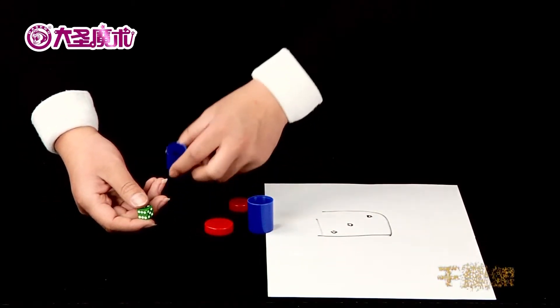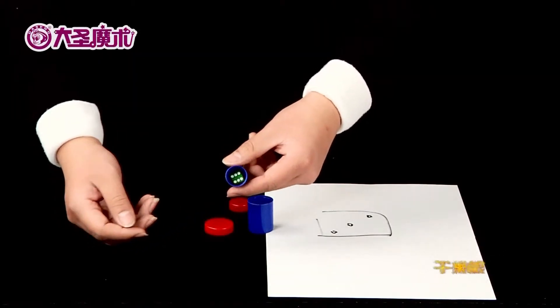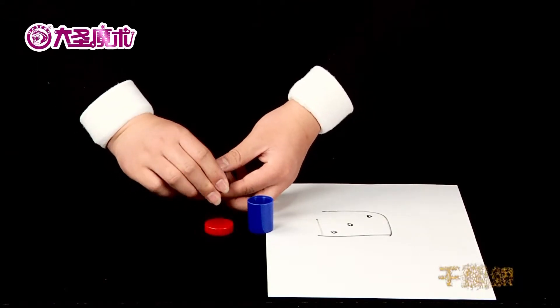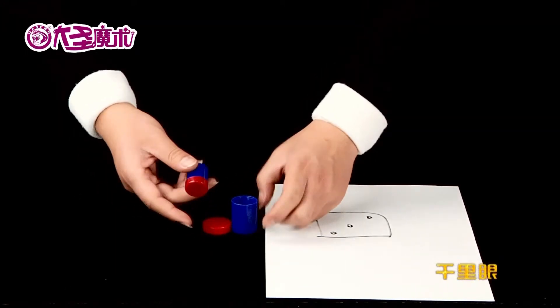Let the audience put the dice in the cylinder themselves and remember the points. Don't let them see. The magician then takes the cover and hands it to the audience, showing it to them.